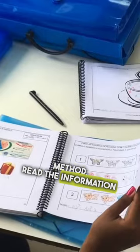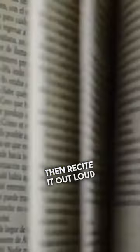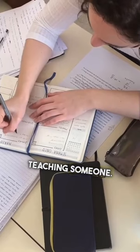Number three, the teaching method. Read the information first silently in your head, then recite it out loud without looking as if you're teaching someone. It's best to do this while pacing around.